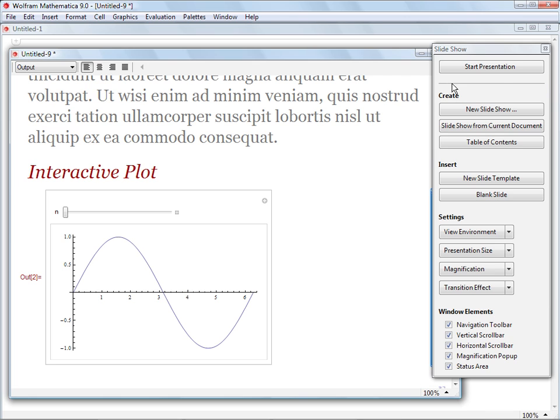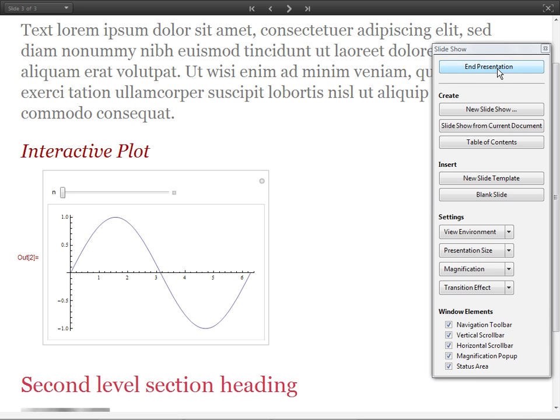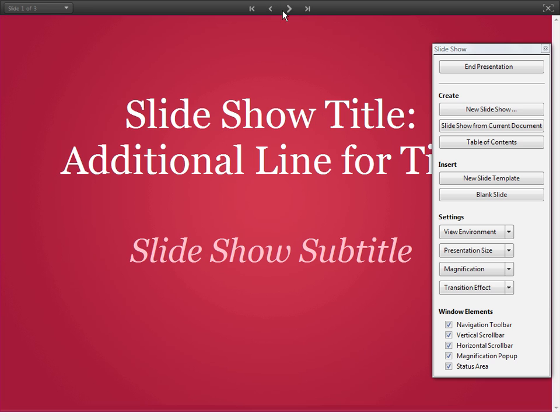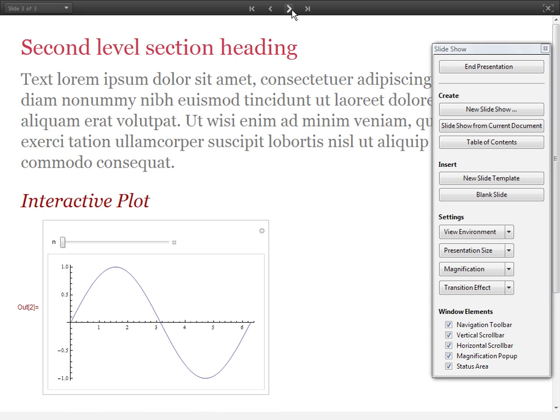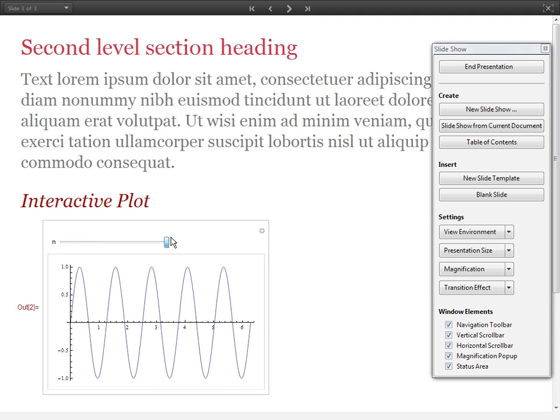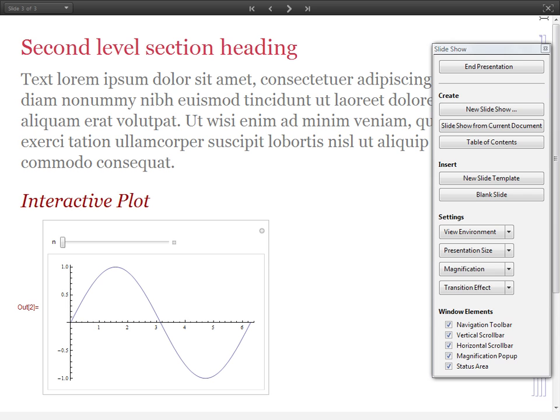Now click Start Presentation on the Slideshow Palette to start the presentation in full screen, without any program menus or operating system windows being displayed. Click the Close button in the top right corner of the window to leave the full screen mode.